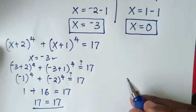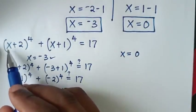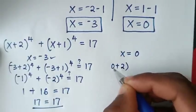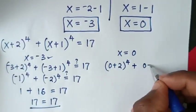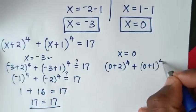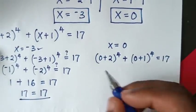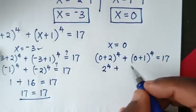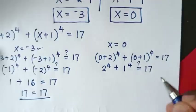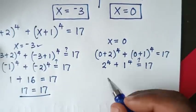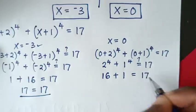Now let's check for x = 0. Substituting: (0+2)⁴ + (0+1)⁴ = 17. So 2⁴ + 1⁴. 2⁴ = 16, and 1⁴ = 1, equals 17.